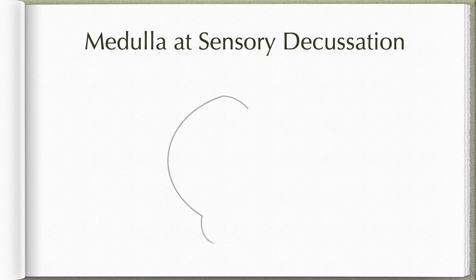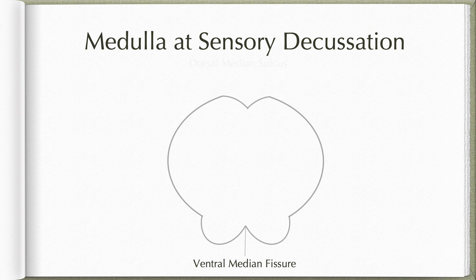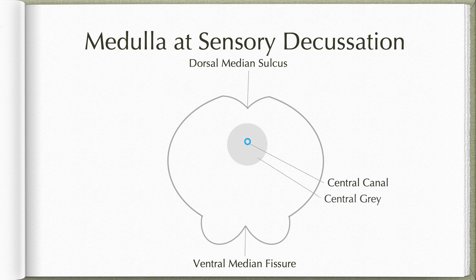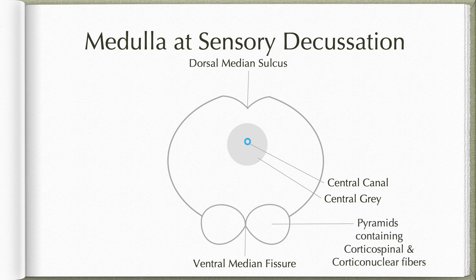This is the outline of the medulla at this level. It shows the ventral median fissure on the ventral aspect and dorsal median sulcus on the dorsal aspect. There is a central canal surrounded by the central gray matter. Note how the central canal is slightly shifted dorsally. On the ventral aspect on either side of the midline, we have a large collection of fiber bundle known as pyramids, which contain both corticospinal and corticonuclear fibers.